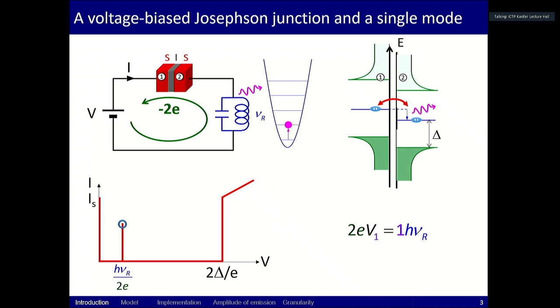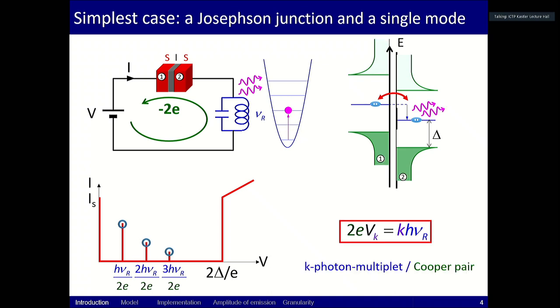To have an interesting situation, you have to add something, like this single LC mode in the circuit here. In that case, when the voltage is equal, when the energy 2eV delivered by the battery is actually the energy of a photon, you produce one photon in the resonator like this, and you get some current. You can do the same reasoning when the voltage reaches the value for two photons, three photons in the resonator, and for any integral number of photons, you will have a resonance with a multiplet of photons being created per Cooper pair passing across the junction.